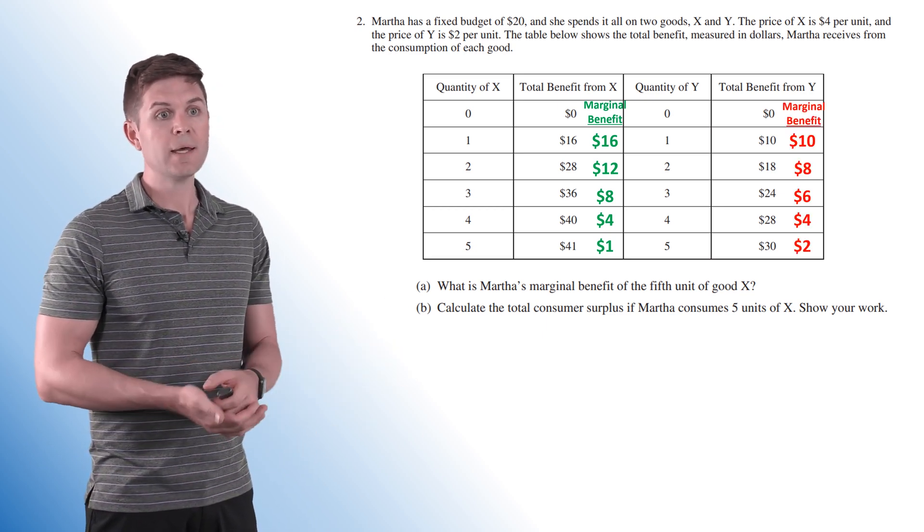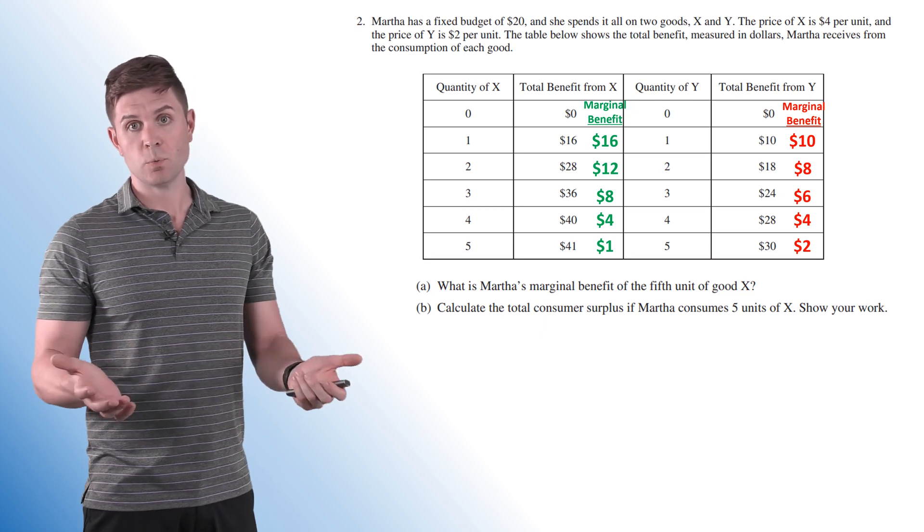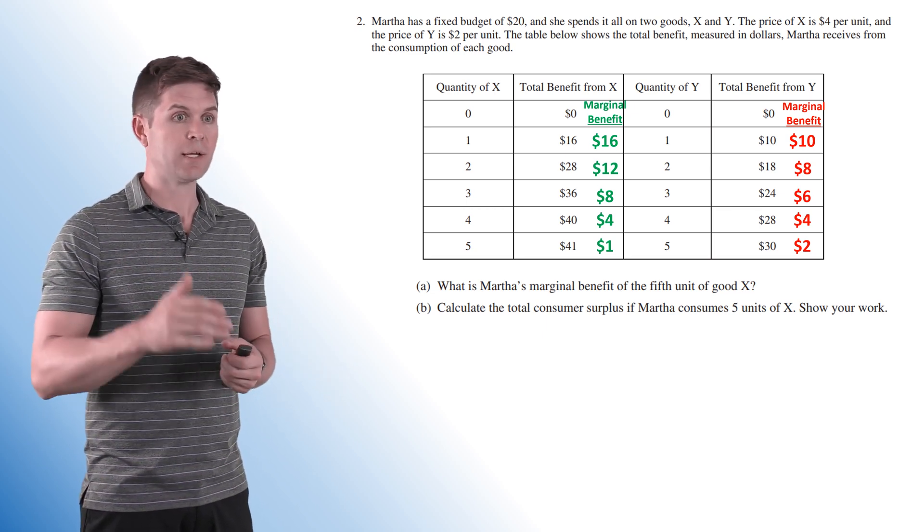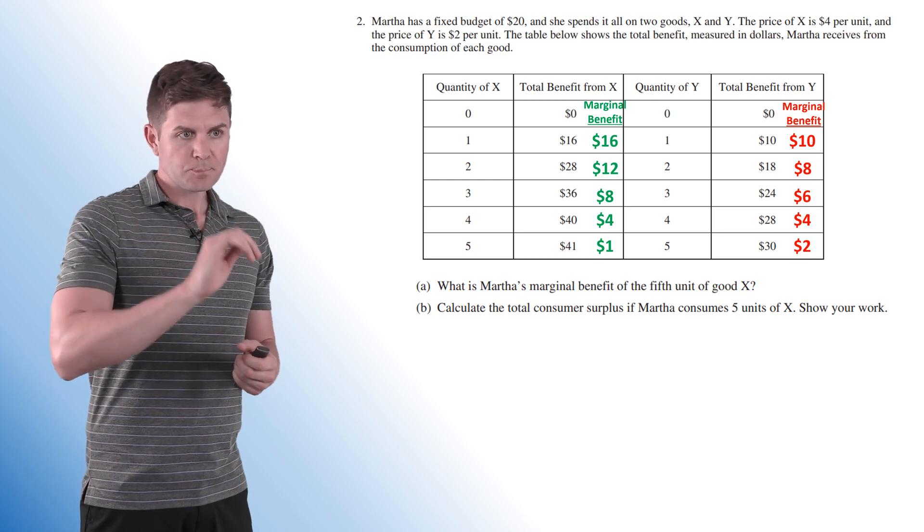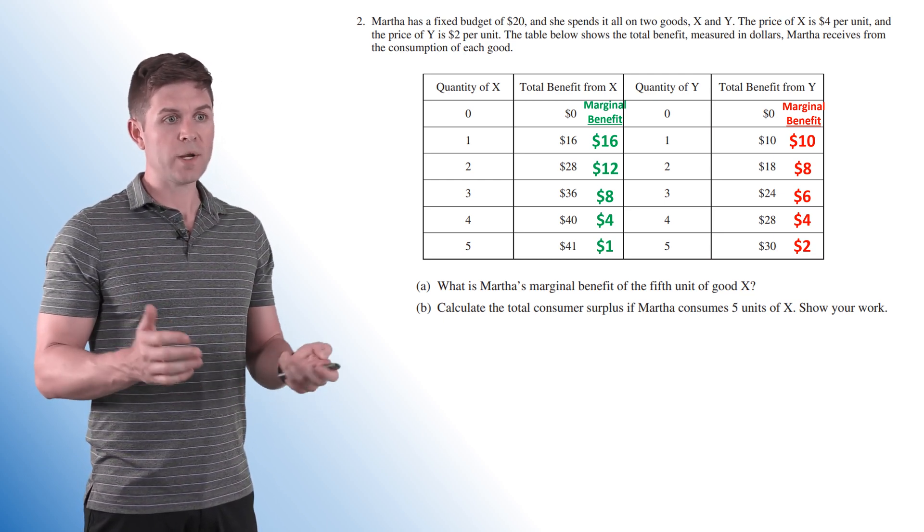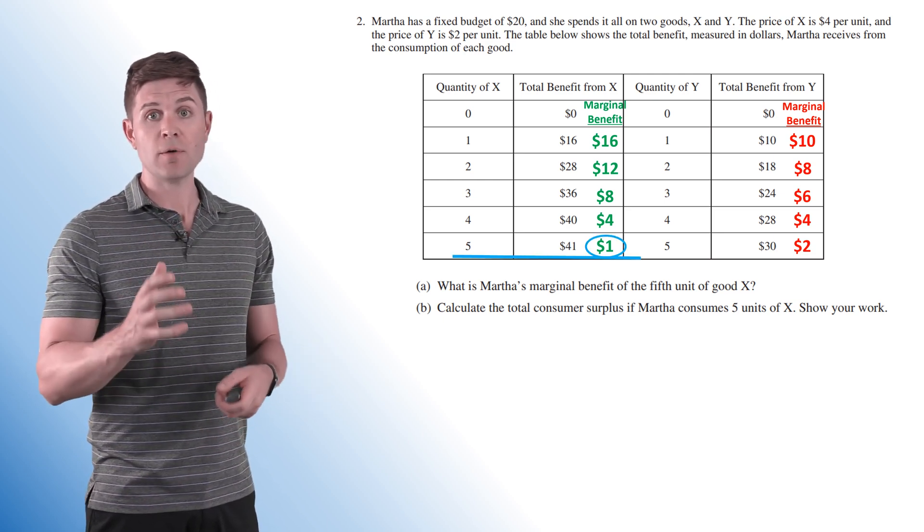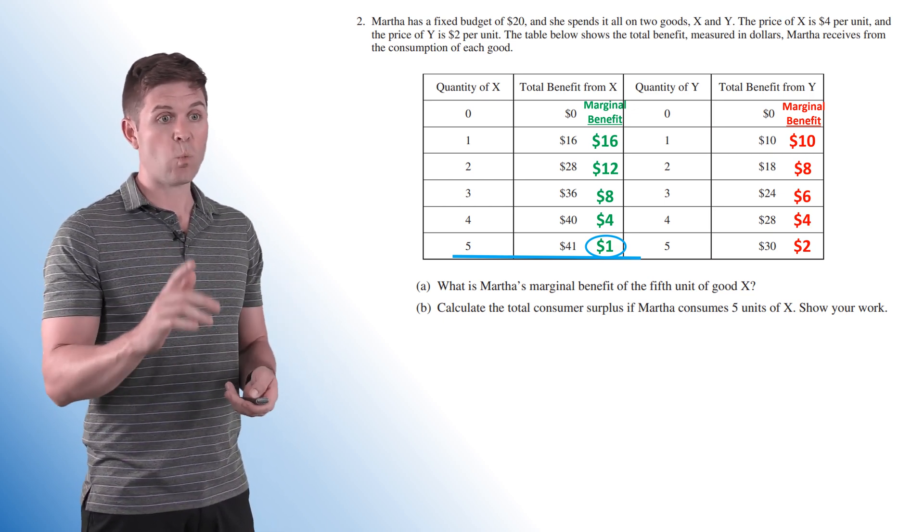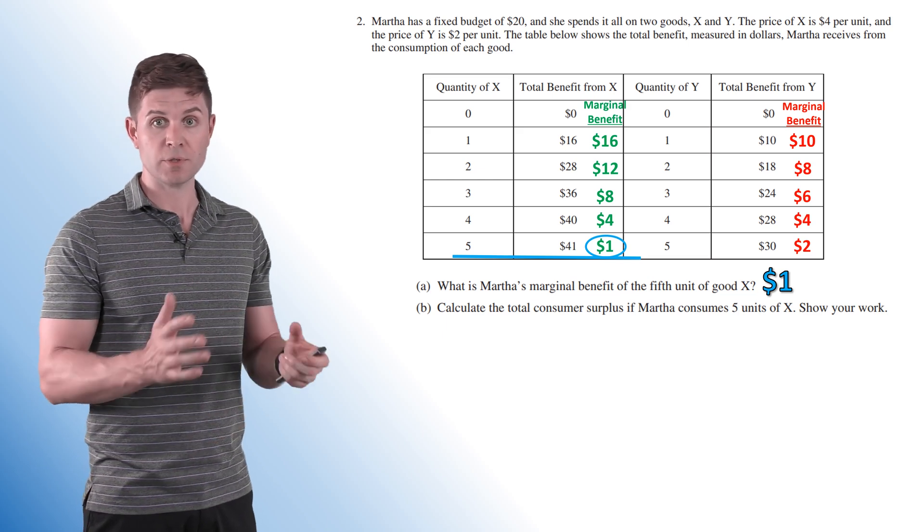And then marginal benefit for Y: 10, 8, 6, 4, and 2. All right, hopefully you're understanding that part. If not, you may want to check out my marginal analysis video. So in this case, we are looking for the fifth unit of good X. And in this case, it provided $1 worth of marginal utility.